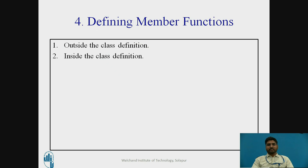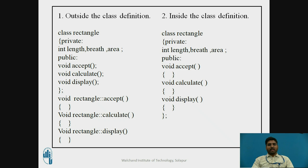When defining member functions, it can be done in two ways: outside the class definition and inside the class definition. For outside the class definition, the class rectangle is written with private and public sections — data members are in private and member functions are declared in public. After terminating the class with a semicolon, we call the class again using void rectangle.